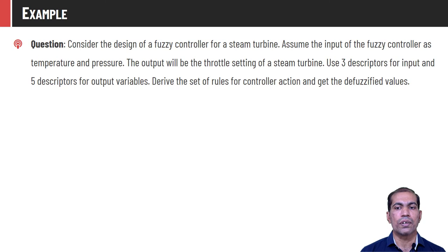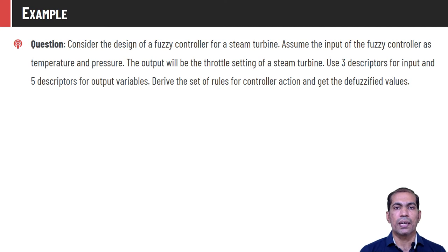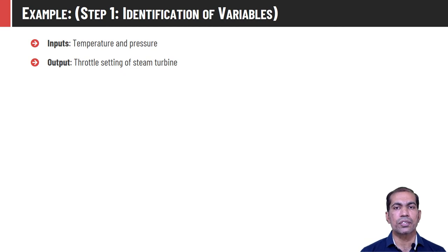Assume that we have to design a fuzzy logic controller for a steam turbine. The inputs are temperature and pressure, and based on their values we have to control the throttle setting of the steam turbine — that is the expected output. We also need to divide the range of input parameters into three different fuzzy subsets and the range of the output parameter into five different fuzzy subsets. The input variables are temperature and pressure, and the output variable is the throttle setting.